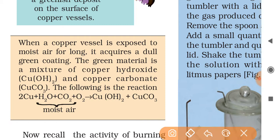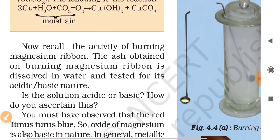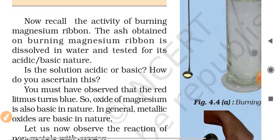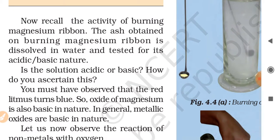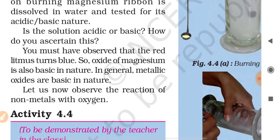Now recall the activity of burning magnesium ribbon. The ash obtained on burning magnesium ribbon is dissolved in water and tested for its acidic or basic nature. Is the solution acidic or basic? How do you ascertain this? You must have observed that the red litmus turns blue. So oxide of magnesium is also basic in nature.